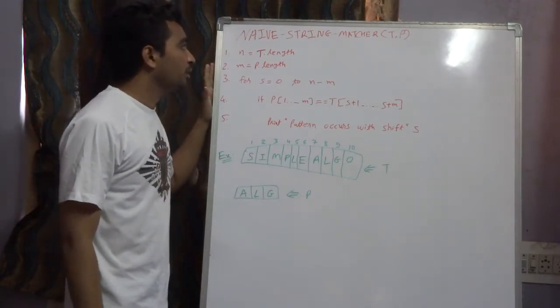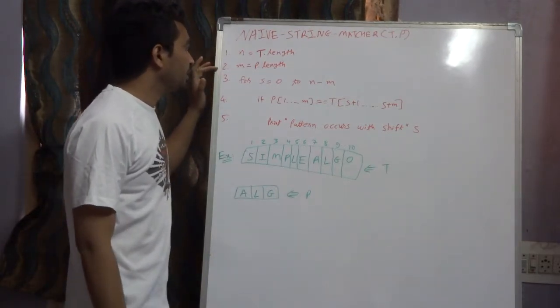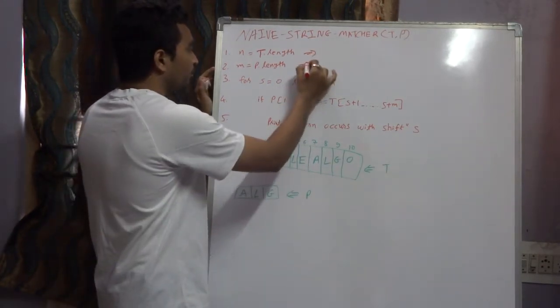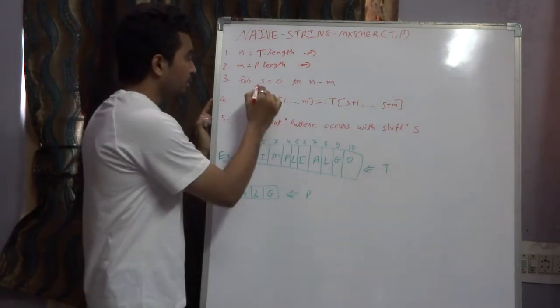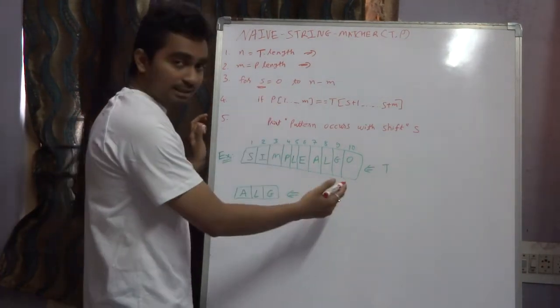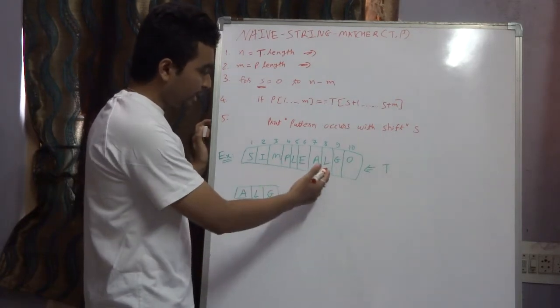Here you can see the algorithm is written. T is for text and P is for pattern. First we find the length of text and the length of pattern, and S is for shifting. Let's see the example.